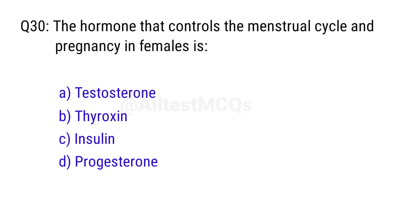Q30. The hormone that controls the menstrual cycle and pregnancy in females is? Right answer is option D, progesterone.